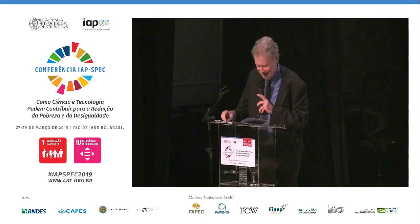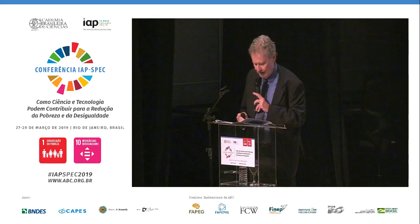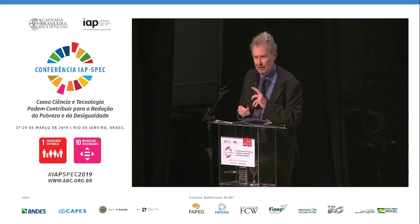And Rashid Bajwa — I hope I pronounced the name correctly — is the leader of the National Rural Support Program in Pakistan, and also leads a very important microfinancing program in Pakistan, which could be an example of a possible action towards poverty reduction.